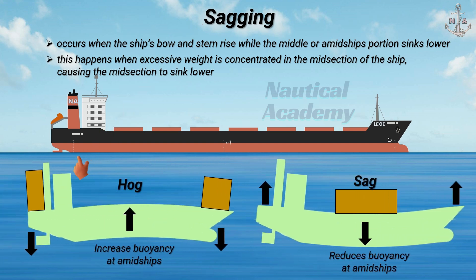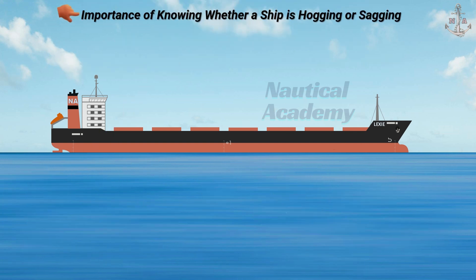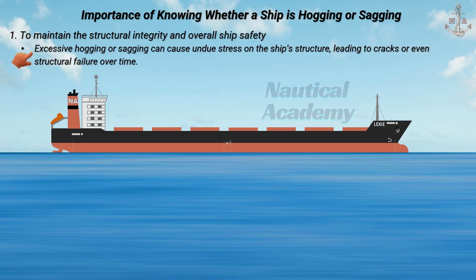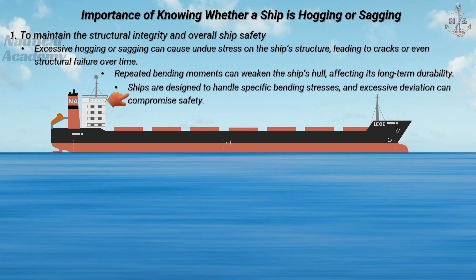There are several reasons why it is important to know whether the ship is hogging or sagging. First, to maintain structural integrity and overall ship safety. Excessive hogging or sagging can cause undue stress on the ship's structure, leading to cracks or even structural failure over time. Repeated bending moments can weaken the ship's hull, affecting its long-term durability. Ships are designed to handle specific bending stresses, and excessive deviation can compromise safety.